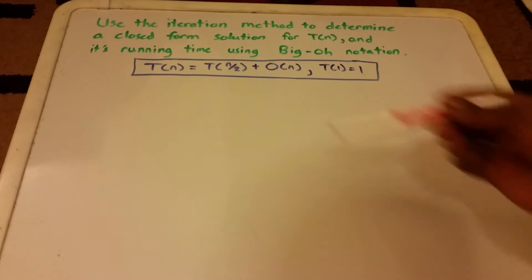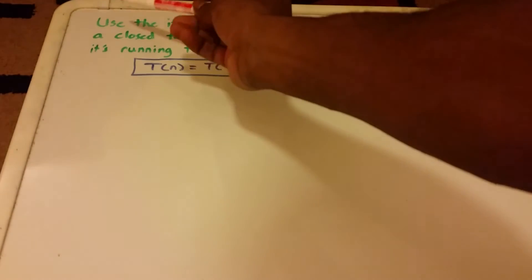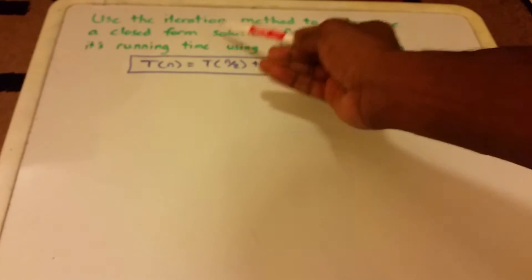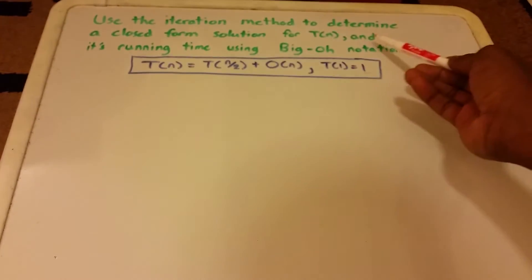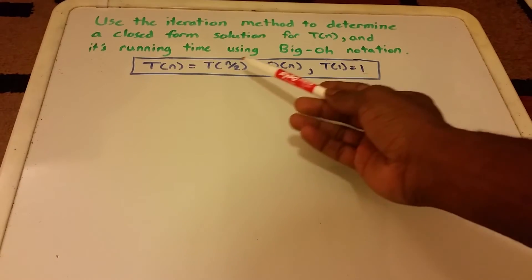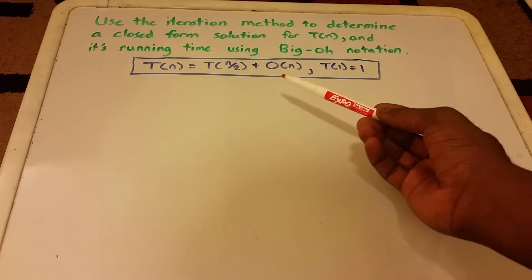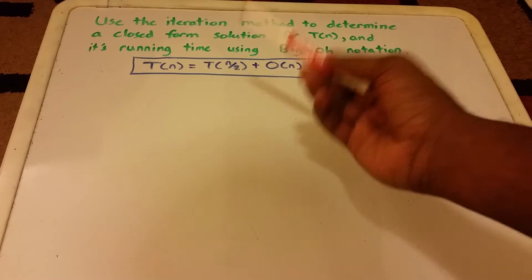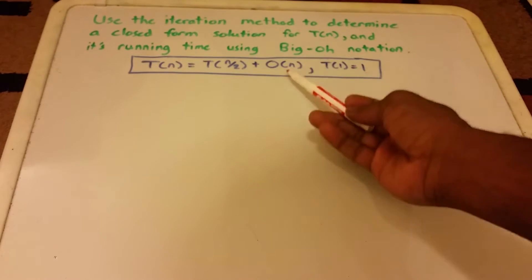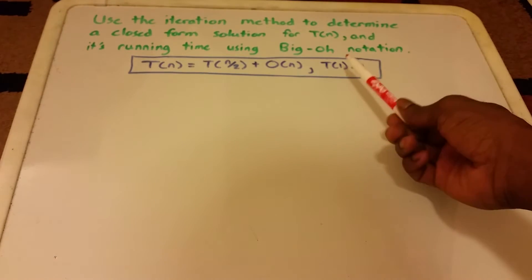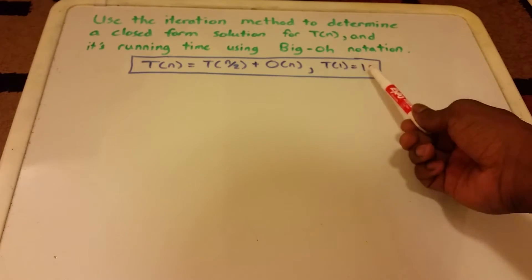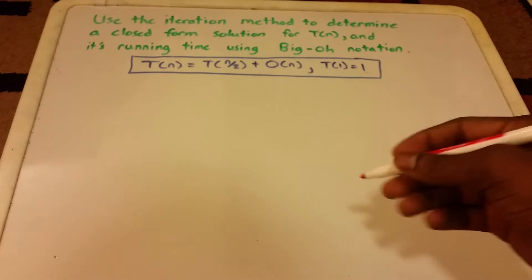Hey guys, so in this video we want to use the iteration method to determine a closed-form solution for T of n and its running time using big O notation. Here in the rectangle I have our recurrence relation which is T of n equals T of n divided by 2 plus big O of n, and the base case is when n equals 1, T equals 1. So let's go ahead and get started.